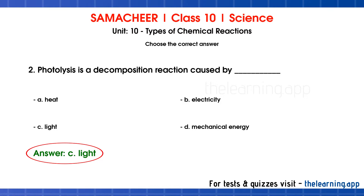Thermolysis is decomposition caused by heat energy. Electrolysis is decomposition caused by electrical energy converting to chemical energy. Photolysis is decomposition caused by light energy converting to chemical energy. Different compounds decompose via these different energy sources to give products.